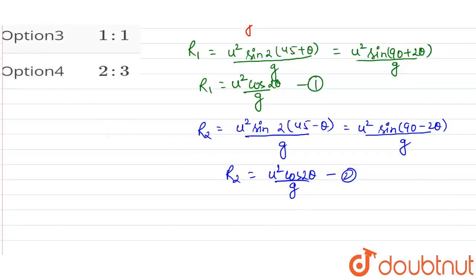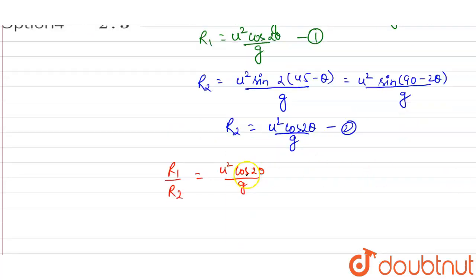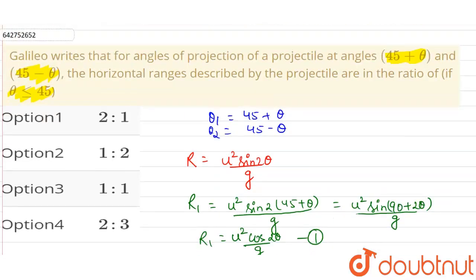So the ratio of the described ranges will be R₁ / R₂ will be u² cos(2θ) / g divided by u² cos(2θ) / g. So the ratio will come out as 1.